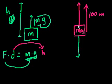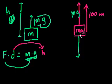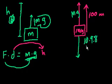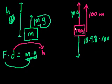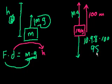So the upward force equals mg. If the mass is 10 kilograms and gravity is 9.8 m/s², and the elevator moves up 100 meters, the work done is 10 × 9.8 × 100 = 9,800 newton meters, or 9,800 joules.